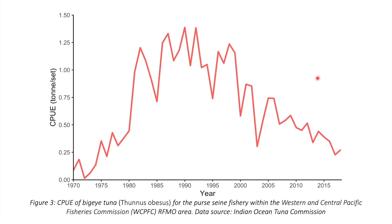By combining both catch and effort data, we clearly see that after peaking in 1990, catch per unit effort has declined. The initial increase in CPUE since 1970 can be attributed to increasingly powerful boats and improved gear catching efficiency.